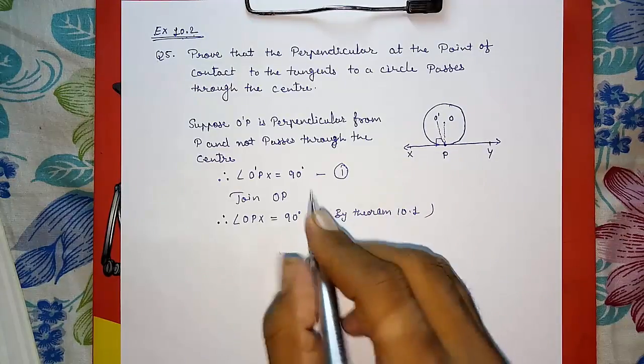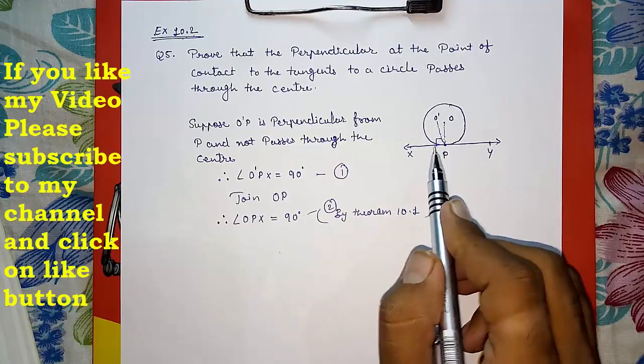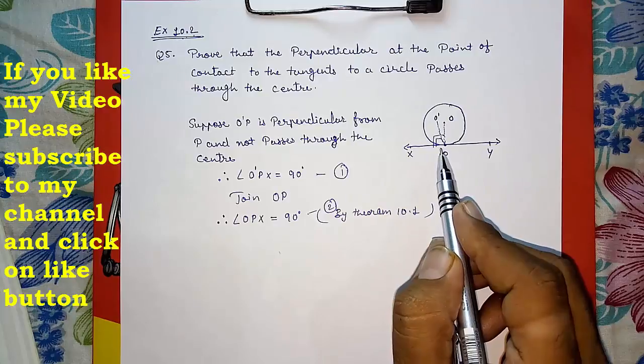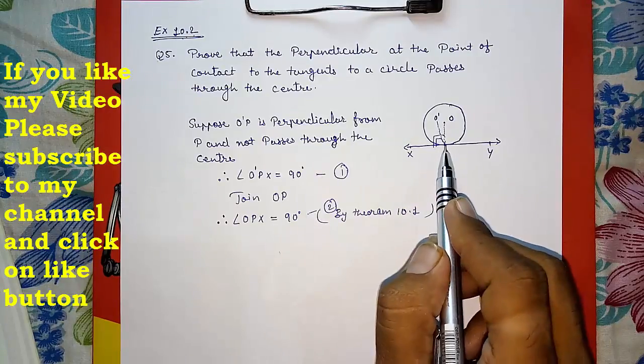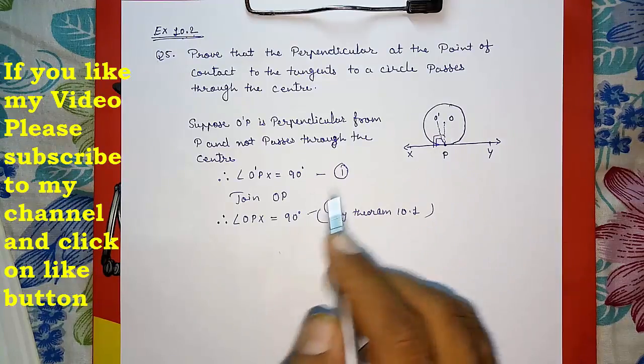From results 1 and 2, we are getting two perpendiculars from the same point, which is totally impossible. From the same point, we cannot have two different perpendicular lines.